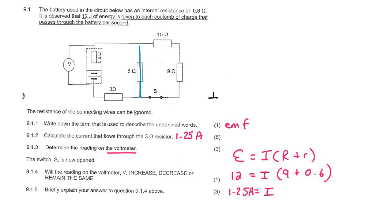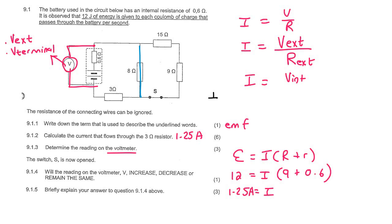The next question says calculate the reading on the voltmeter. Now remember that when you have a voltmeter connected outside the battery like this, then this is measuring the external voltage. Your teacher might call it the terminal voltage. So if you've watched any of my other electricity videos, you'd know that I'm always talking about I equals to V over R. And you can use different voltages with different resistors. So for example, if you want to use the external voltage, then you must use the R external, which is all the resistors on the outside. If you want to use the internal voltage, which is the voltage in the battery, then you must use the internal resistance. And if you want to use the EMF of the battery, then you must use the internal resistance and the external resistance. And so I think the best one for this question would be to use this one over here, because we are trying to calculate the external voltage.